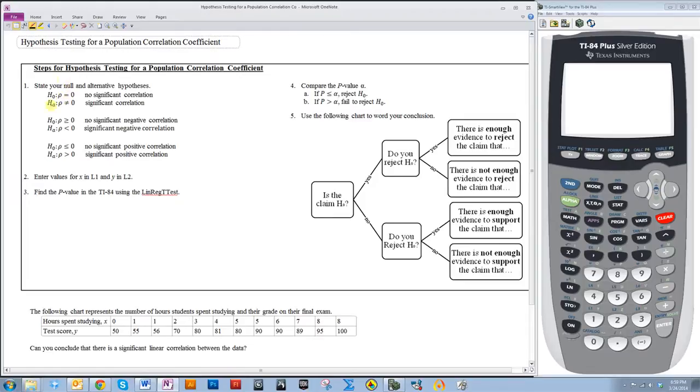And there are different pairs of hypotheses that you're going to use depending on what you're trying to test. If you're talking about correlation being significant, you would use this set. If you're talking about it being negative, you would use this set. And if you're talking about it being positive, you would use this set.